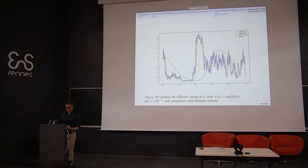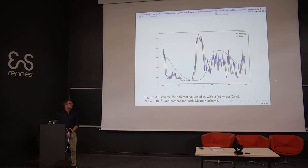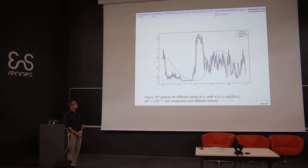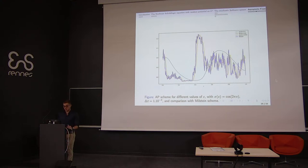We state our first result: that the first scheme introduced is indeed asymptotic preserving, and we give the limiting scheme, equation 25, which still contains the prediction-correction method. This is illustrated graphically: in blue is the solution of the limiting equation approximated by the Milstein scheme, and the three other curves describe the numerical scheme for different values of epsilon. For the smallest value of epsilon, the behavior of the numerical scheme is almost the same as that of the limiting solution, confirming our theoretical results.